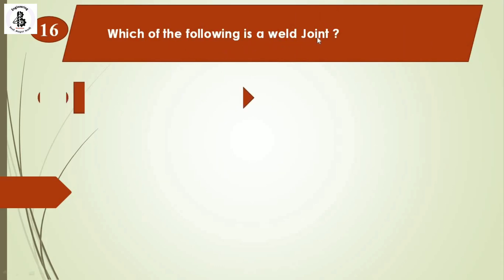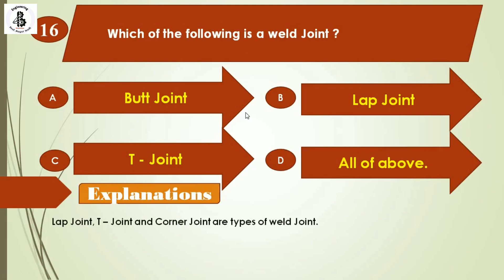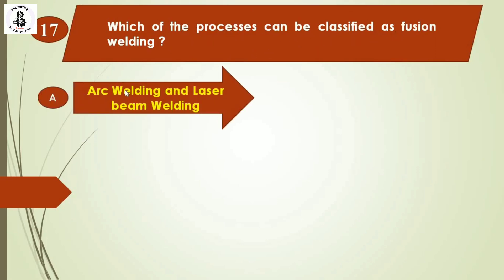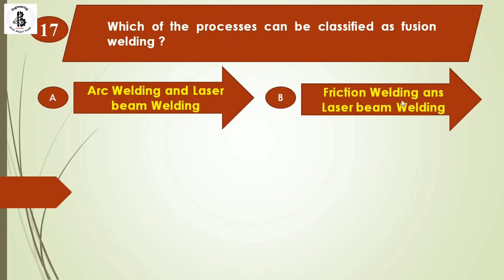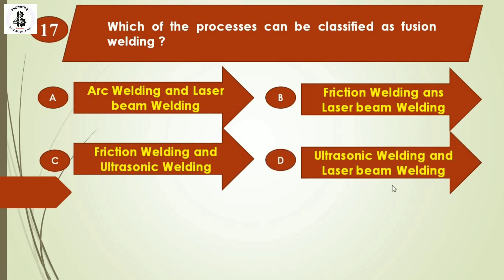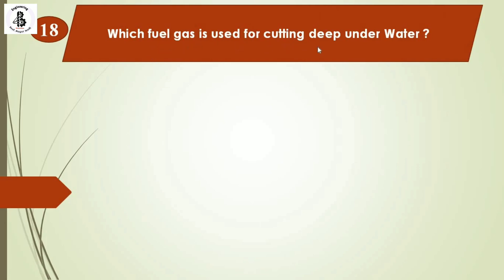Question 16: Which of the following is a weld on the mutual/peripheral welding category? Option A: arc welding and laser beam welding, option B: friction welding and laser beam welding, option C: friction welding and ultrasonic welding, option D: ultrasonic welding and laser beam welding. Arc welding and laser beam welding are categories of fusion welding. The right answer is option A.